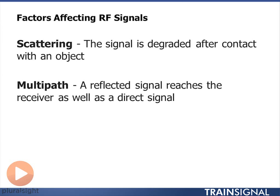Lower frequencies tend to have more reflection, which is why we don't need line of sight. Up at the higher frequencies, signals tend to scatter, and typically at the higher frequencies you need to have line of sight between the transmitter and the receiver.